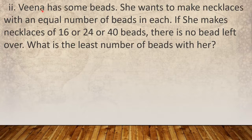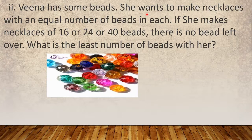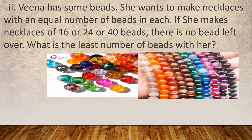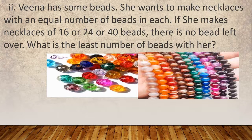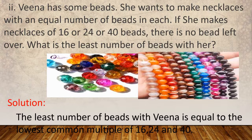Question number 2: Veena has some beads. She wants to make necklaces with an equal number of beads in each. If she makes necklaces of 16, or 24, or 40 beads, there is no bead left over. What is the least number of beads with her? So we have to find out the least number of beads. The least number of beads with Veena is equal to the lowest common multiple of 16, 24, and 40.